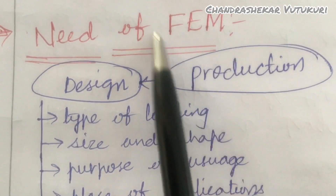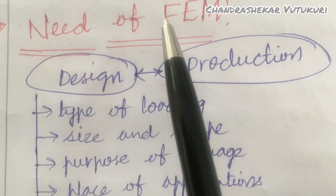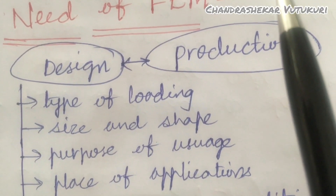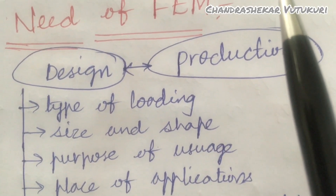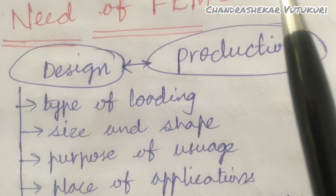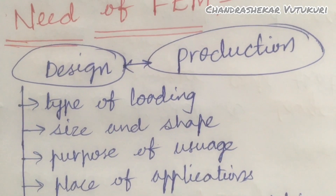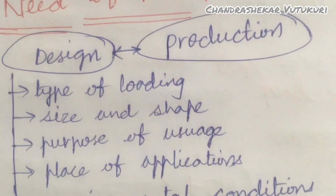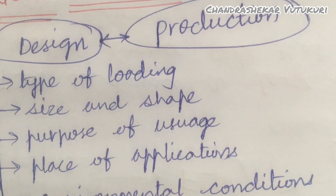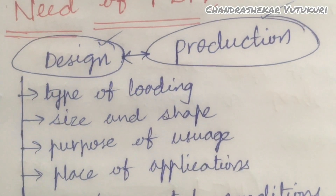For example, in order to have a production of any mechanical component or a machine component related to mechanical, civil, electronics, or aeronautical, the entire work mostly depends on certain departments — the design department and the production department.